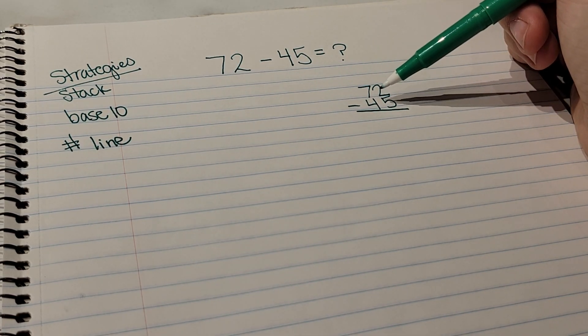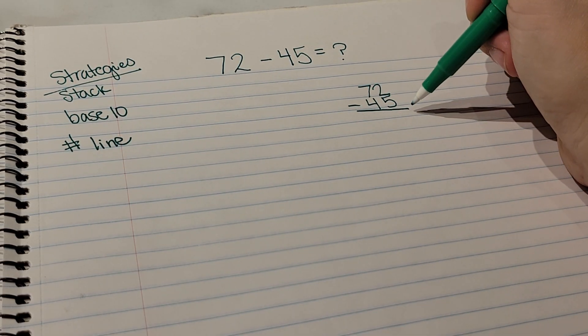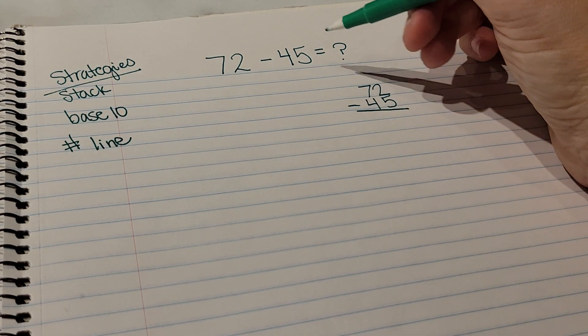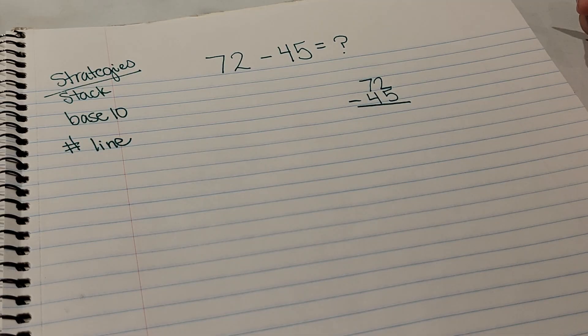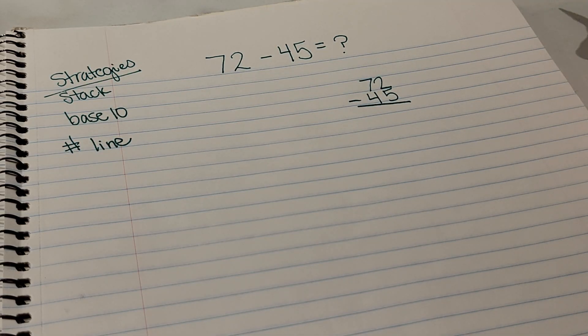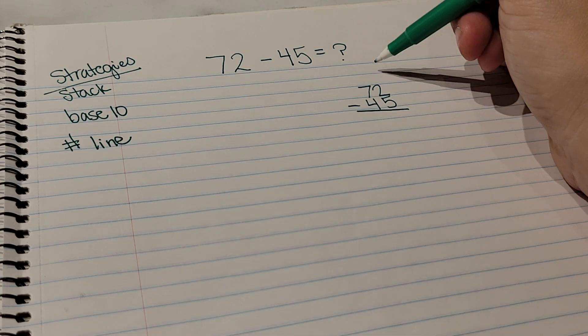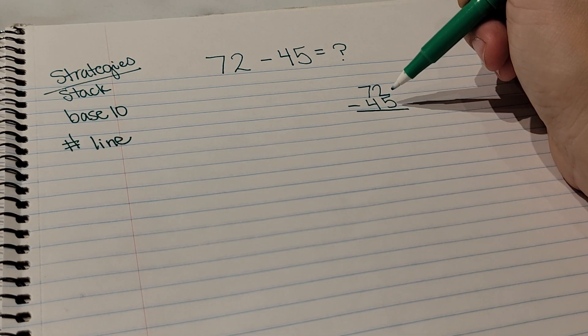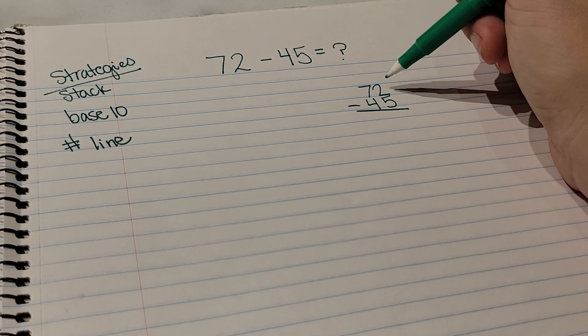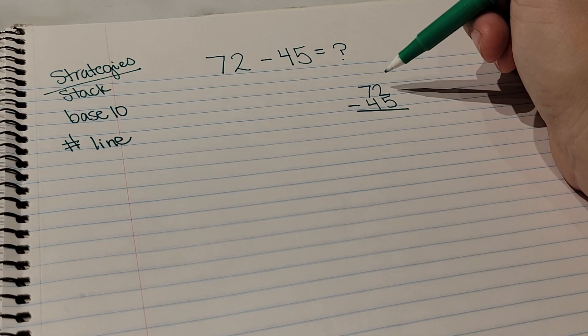This teaches them that the large number goes on the top, the smaller number goes on the bottom, they draw their equal line, and then they check their sign to make sure they have the right math equation. Then from there, you know that we start on the ones place side.